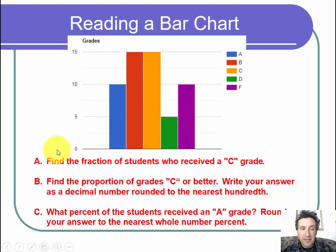There are three questions. The first is find the fraction of students who received a C grade. The second is find the proportion of grades C or better. Write your answer as a decimal number rounded to the nearest hundredth. And then finally, what percent of the students received an A grade? Round your answer to the nearest whole number percent.